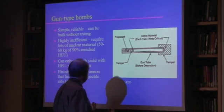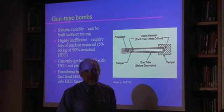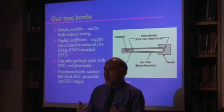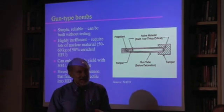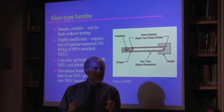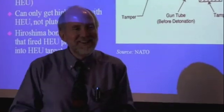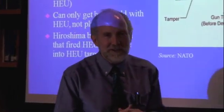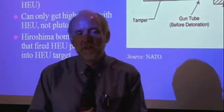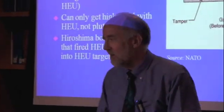So the Hiroshima bomb had, for example, 60 kilograms of material that was about 80% enriched. Interestingly enough, the first ever nuclear bomb used in war was not weapon grade material. Weapon grade material, as we'll talk about later, is more than 90% enriched uranium. The Hiroshima bomb was only about 80% enriched uranium.